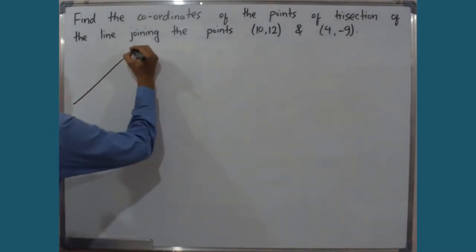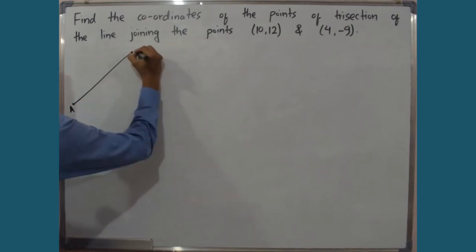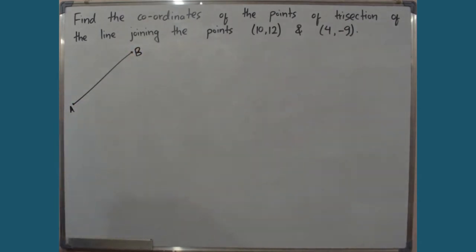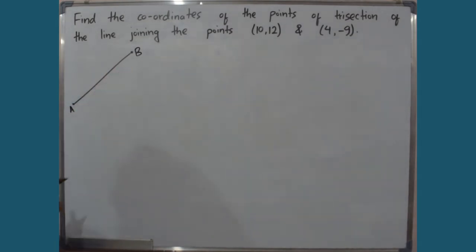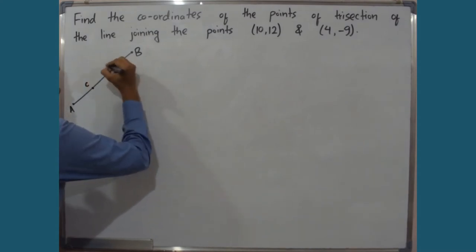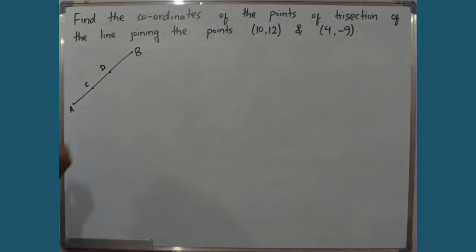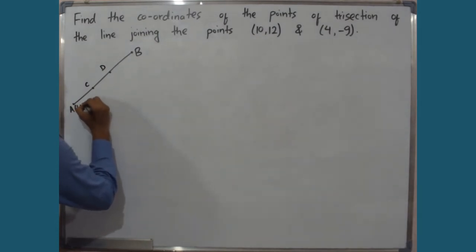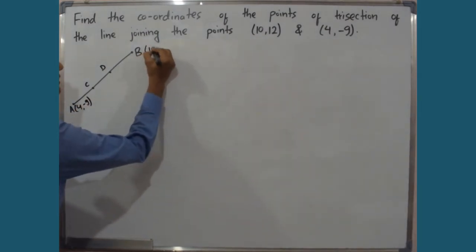This is our line AB. If we divide it into 3 equal parts, this line is trisected. Let us divide this line into 3 equal parts. Let this be point C and let this be point D. The A coordinate is (4, 9) and the B coordinate is (10, 12).